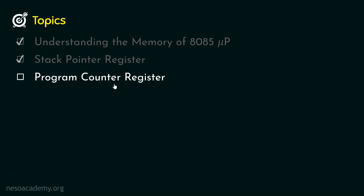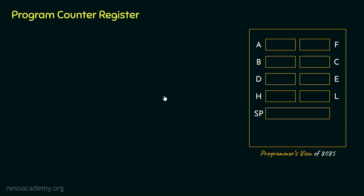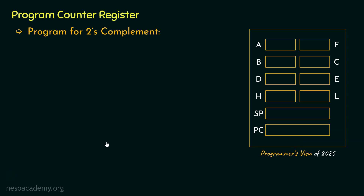Let's now learn about the program counter register. In the programmer's view of 8085, the last register we are going to add is the PC or program counter register. It is also 16 bits. To understand its functionality, let's look at a program for 2's complement. As we saw in the previous chapter, we first toggle the bits to find the 1's complement, then add 1 to that 1's complement to get the 2's complement value.